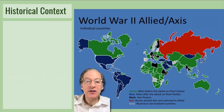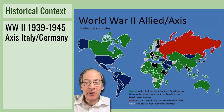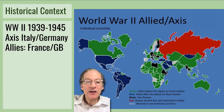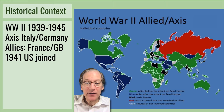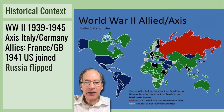World War II started in Europe in 1939. The main antagonists were actually the same: Italy and Germany on the Axis side, and France and Great Britain on the side of the Allies. In 1941, the U.S. joined when the Japanese bombed Pearl Harbor in Hawaii. Also in 1941, Germany attacked its ally Russia, and Russia flipped sides.